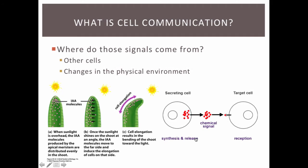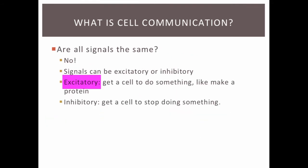When a cell is talking to another cell, they communicate through chemicals. We call the cell that makes the chemical or sends the message the secreting cell, and the cell that receives the signal the target cell. Not all cell signals are the same — signals can be excitatory or inhibitory. Excitatory signals get a cell to do something, such as activating a gene for making a particular protein. An inhibitory signal gets a cell to stop doing something or prevents a cell from doing something.